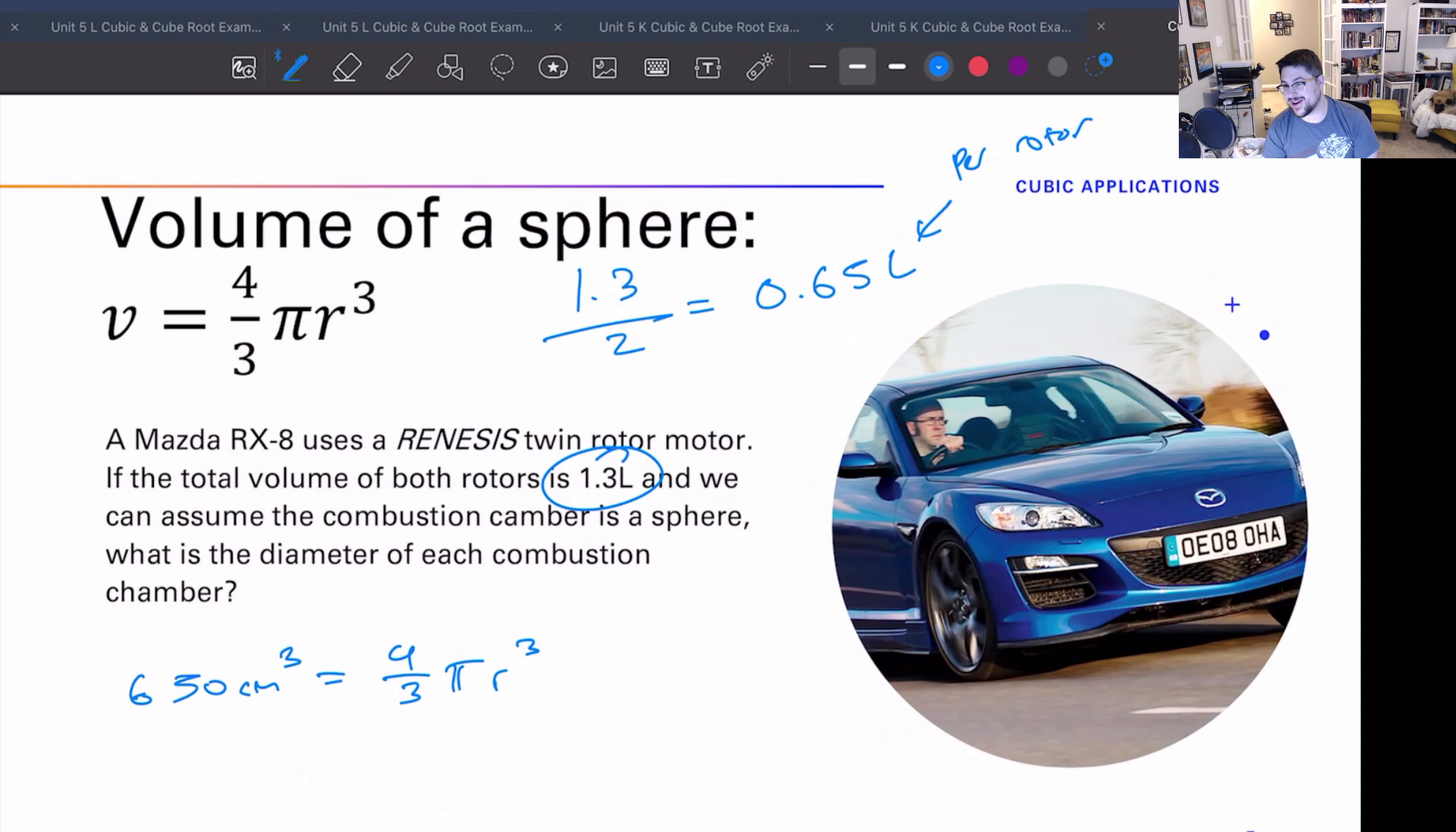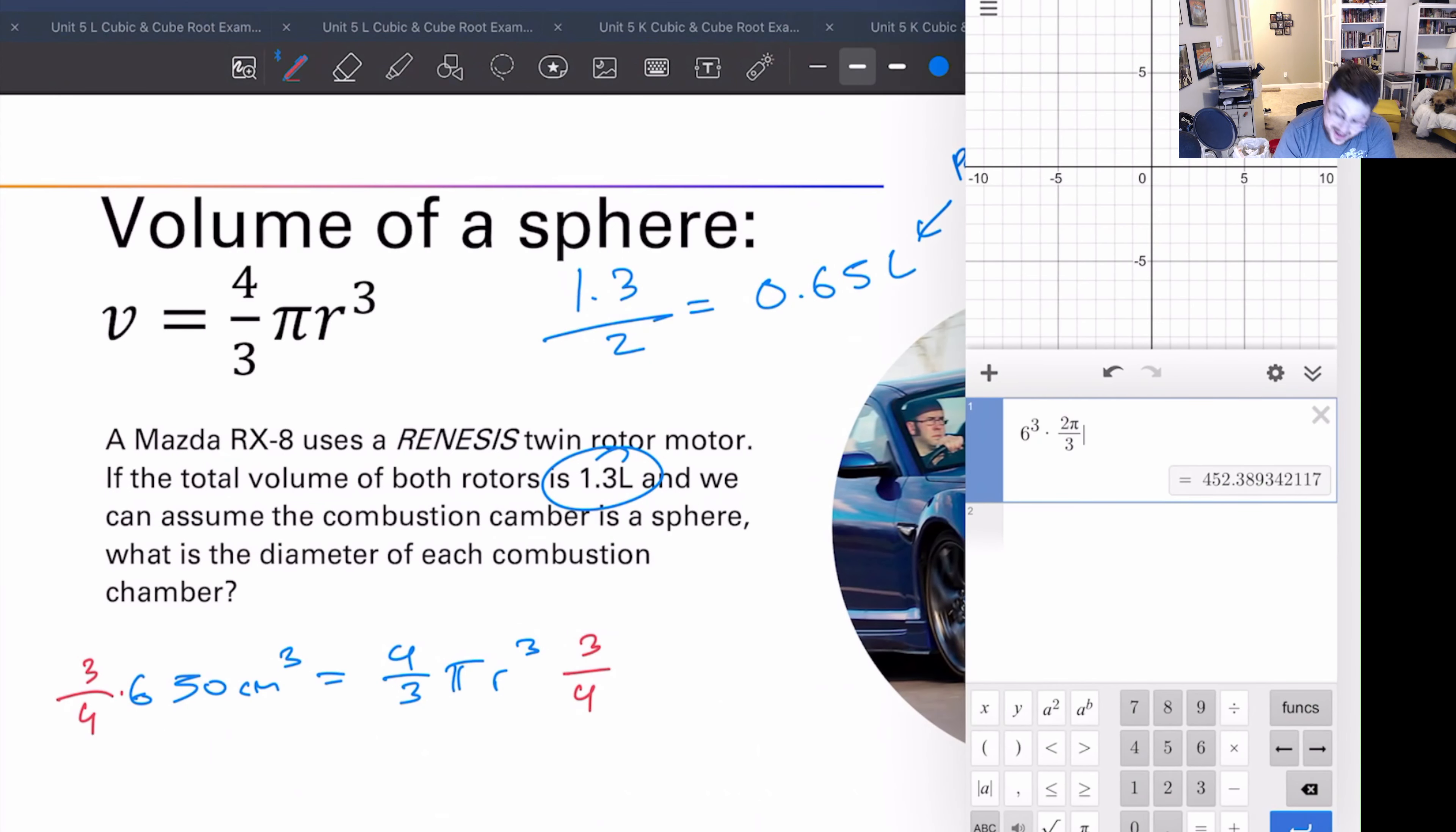So let's turn this into centimeters cubed. This is in liters, so multiply by a thousand. That is 650 centimeters cubed. Now we actually have a unit to talk about our radius. This is getting into nerd stuff, but love it. Alright, now let's solve this thing. We want to get rid of the four thirds, so we multiply it by three over four, multiply it by three over four, grab this thing.